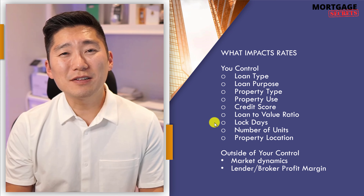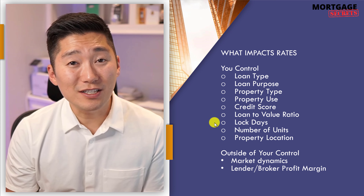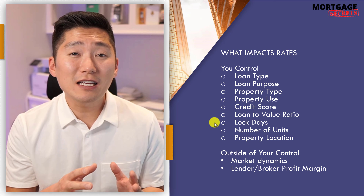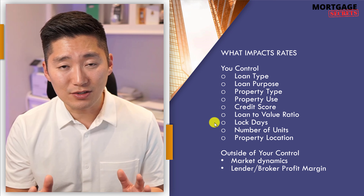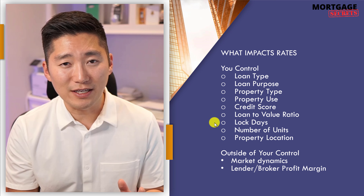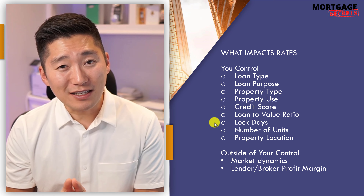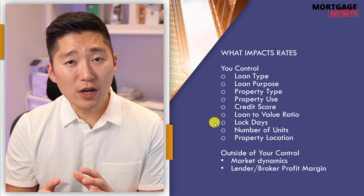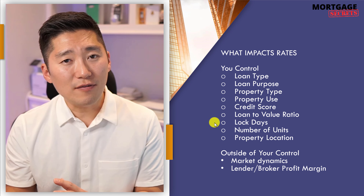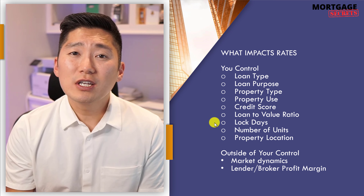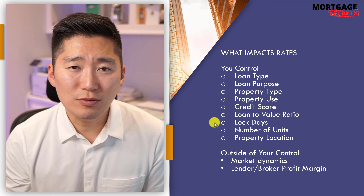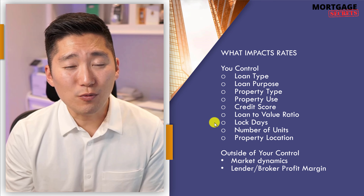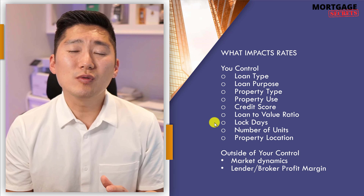Lock days — basically mortgage rate lock days. How long is the rate lock going to be? 15 days, 30 days, 45 days? Or are you going to be floating your rate, meaning you won't lock at the beginning and you'll play the market — which I discourage. Now, buyer beware: some loan officers will quote you for the shortest lock term possible, like 10, 14, or 15 days, to try to compete and beat the quotes you're receiving.